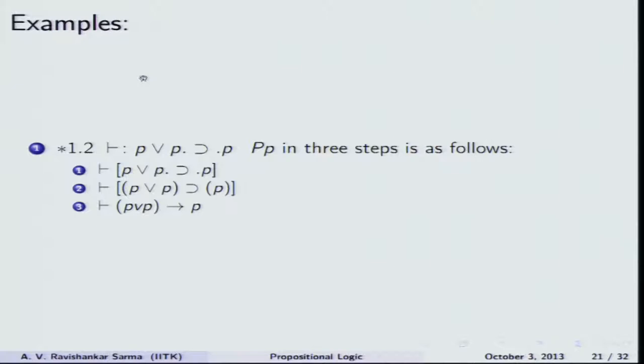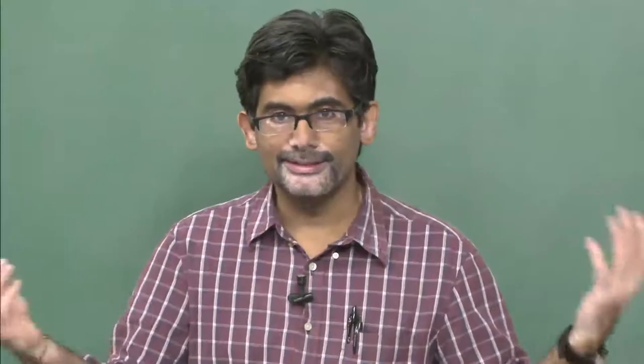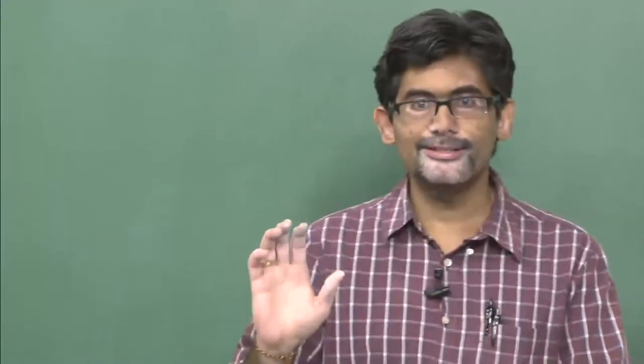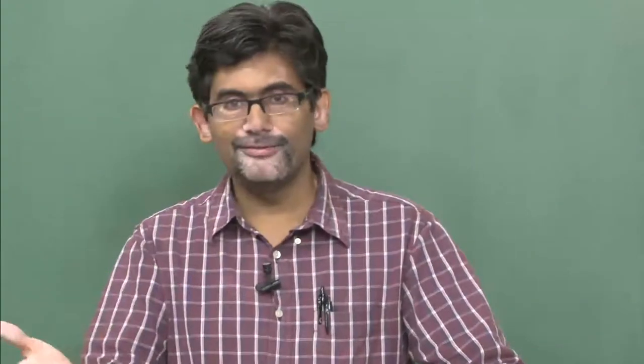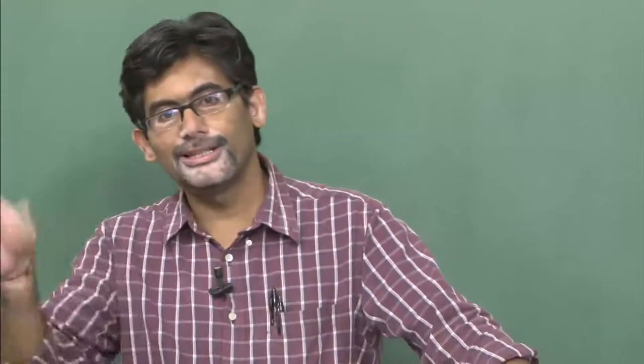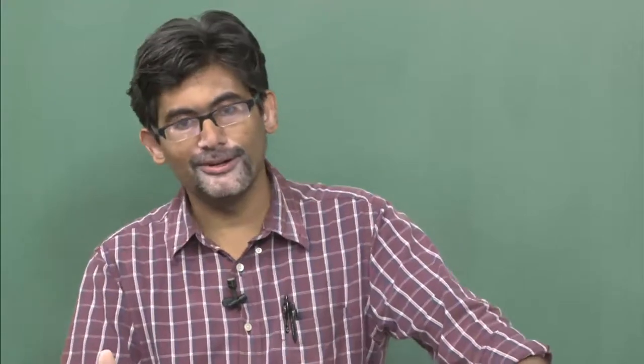Any axiomatic system should yield the three fundamental laws of logic: the law of identity (P implies P), the law of excluded middle (P or not-P), and the law of non-contradiction (not(P and not-P)). At minimum, these three laws should come as outcomes of the formal axiomatic system, since all other things are constructions built on these three fundamental laws.